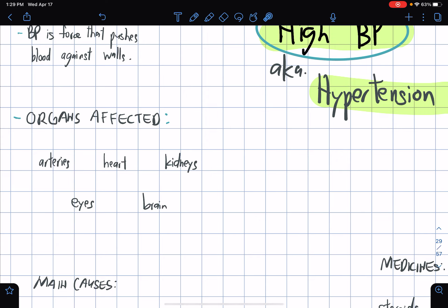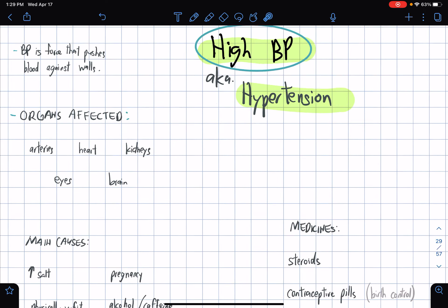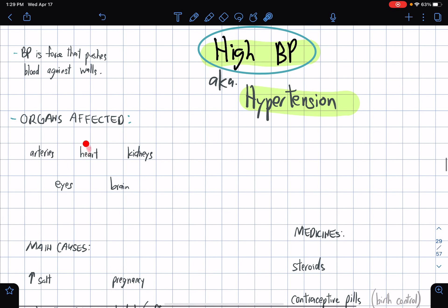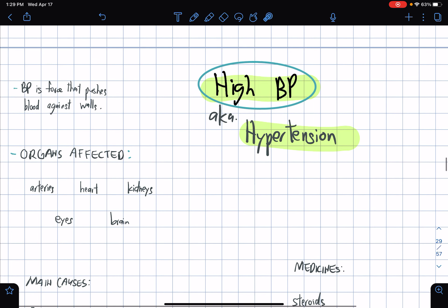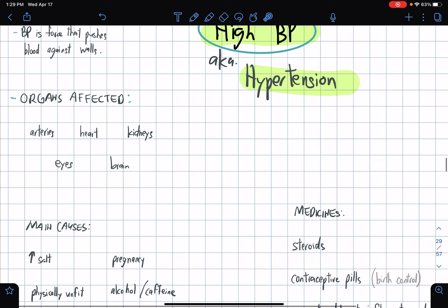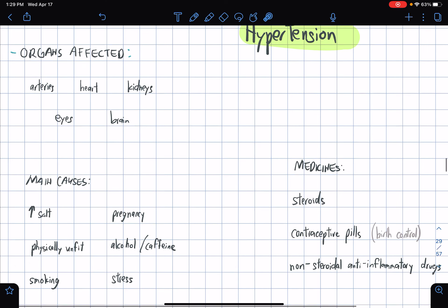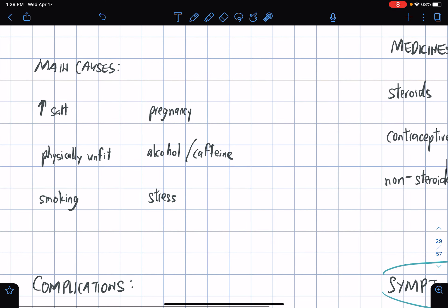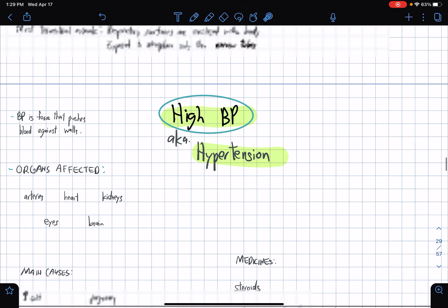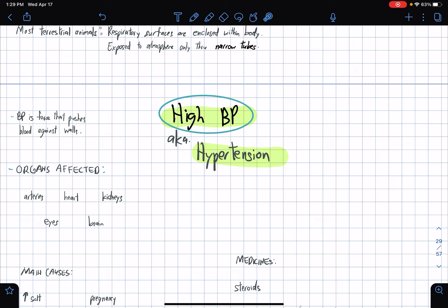What are the affected organs in hypertension? Arteries, the heart, the kidneys, the eyes, and the brain. What are the main causes of high blood pressure? Too much salt. High blood pressure is directly associated with kidney problems, which are triggered by the consumption of too much salt.